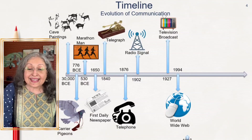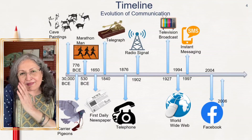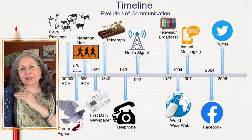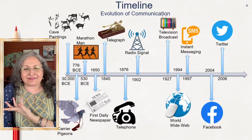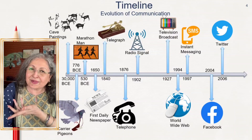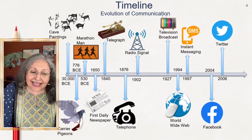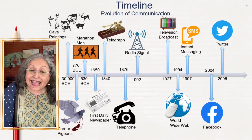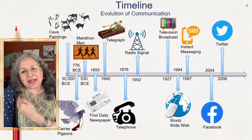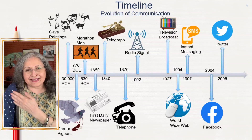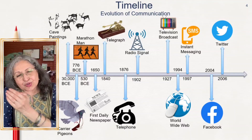Then came the worldwide web, instant messaging services, and Facebook in 2004 — all of this is communication. This is how we plot it on a timeline, to show students that human beings have always wanted to communicate — it's a deep social need, which is why Facebook and WhatsApp are so popular. Notice the irony: we had carrier pigeons in 776 BCE, and today we're back to Twitter. This is how human beings have evolved in communication — a timeline shows the evolution of an idea and the events plotted along that line.